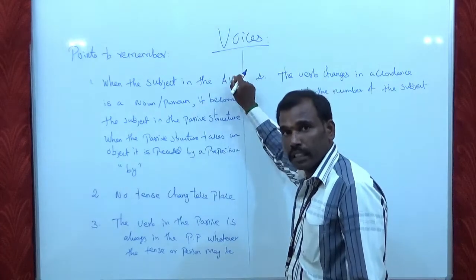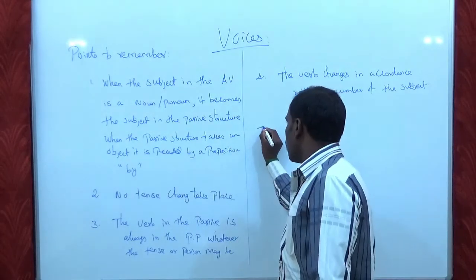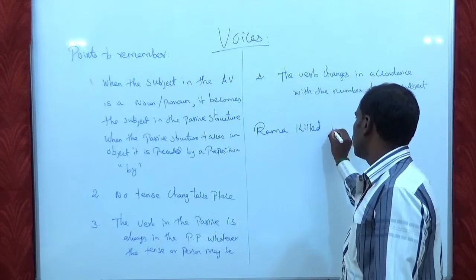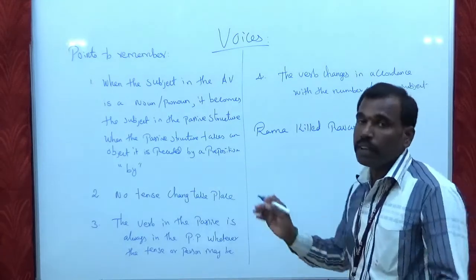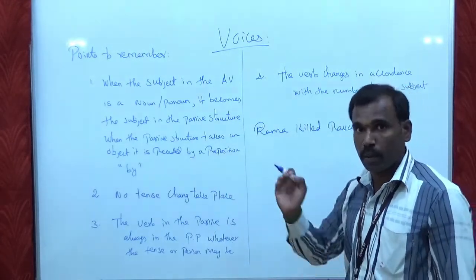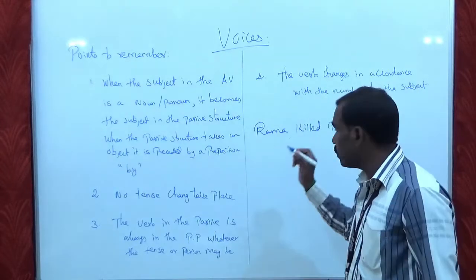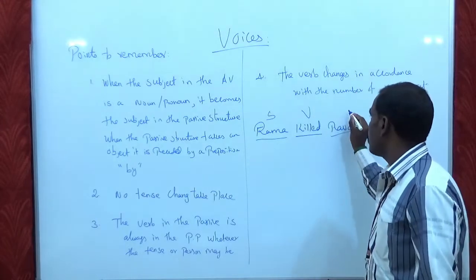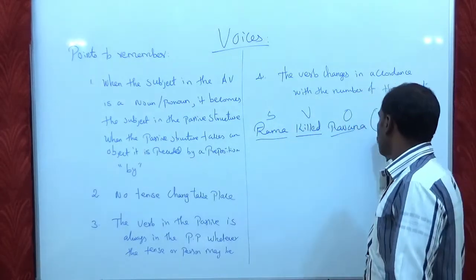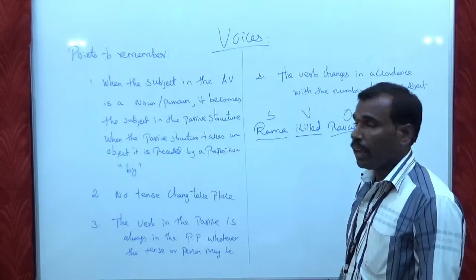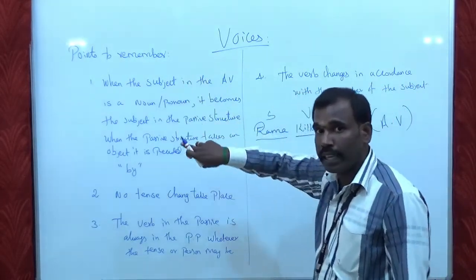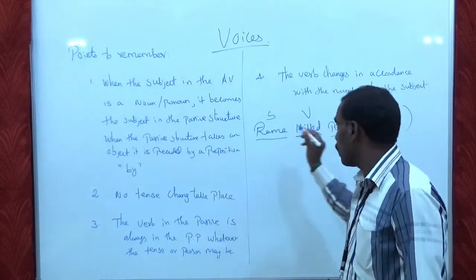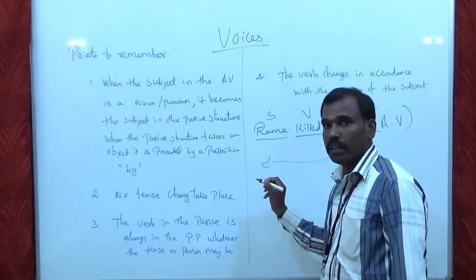For example: Rama killed Ravana. In this sentence, Rama is the subject, killed is the verb, and Ravana is the object. This is in active voice. When you change active voice into passive, the object becomes subject — that is, Ravana is going to be the subject now.